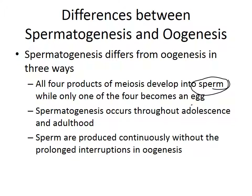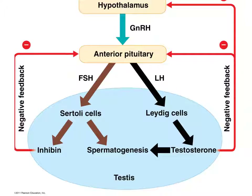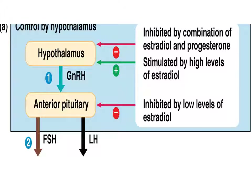Looking at the negative feedback loops for spermatogenesis: it's controlled by the hypothalamus and the anterior pituitary, which produce FSH and LH, which then act on the sperm and produce viable sperm. You have the same control in females — again by the anterior pituitary, through FSH and LH. I hope this was a helpful review. I will see you next time, students.